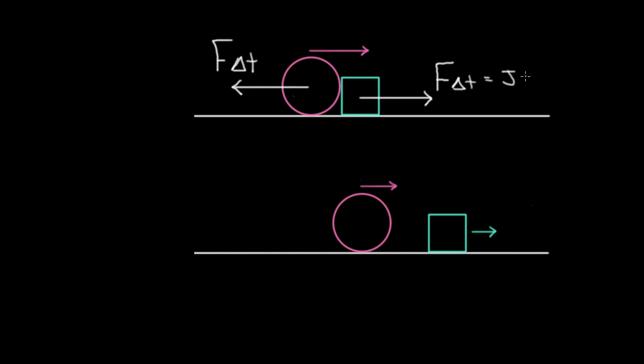Now, this is the change in momentum. This will equal the change in momentum. So if you want to know how much momentum was gained by this green cube, multiply the force exerted on it by the time, you'll get the change in momentum of the green cube.